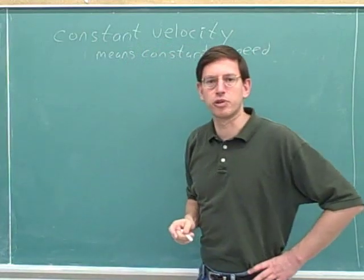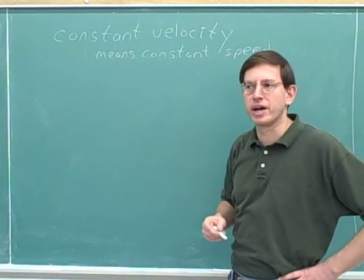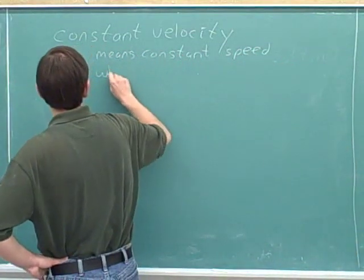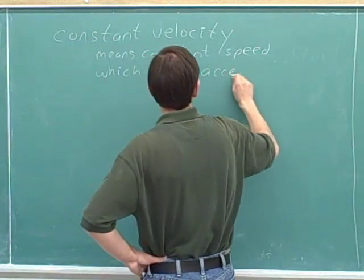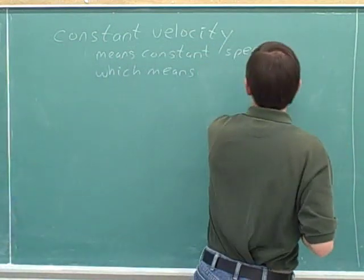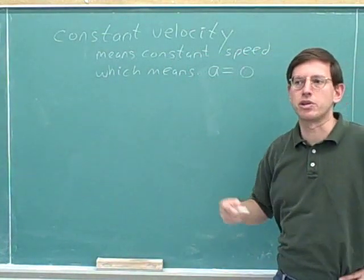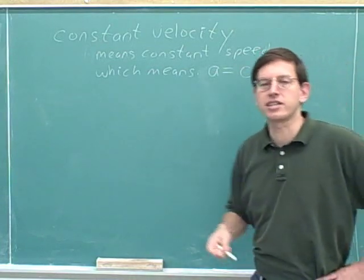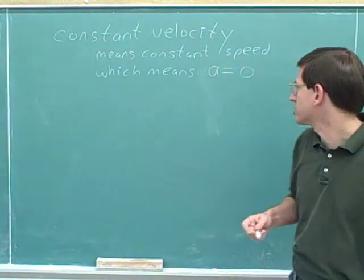What does constant speed tell you about the acceleration? Well, that means the acceleration is zero. It means the object is not accelerating — there is no acceleration. Constant velocity means no acceleration. The acceleration tells you how fast the velocity is changing, so if the velocity is not changing, the acceleration is zero.